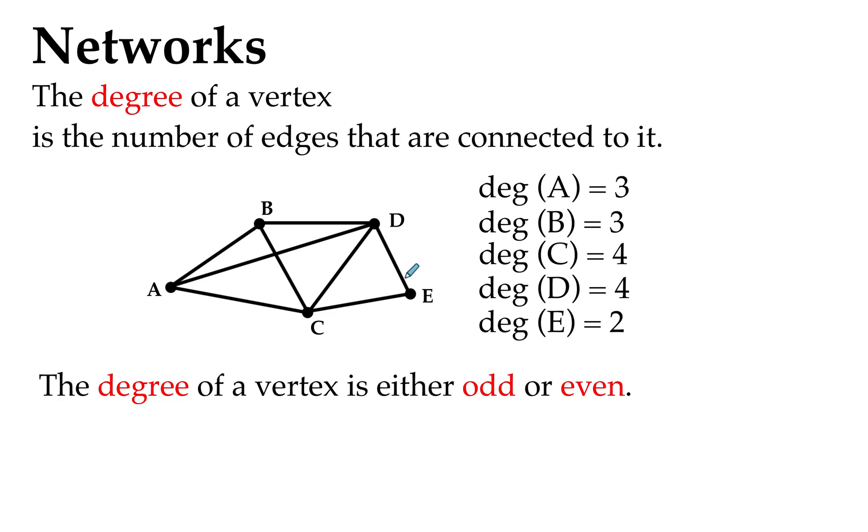And another aspect of a degree is that it can be deemed to be odd or even, just according to the number of edges connected to it. So degree A, which has three edges, degree of A is three and three is an odd number, so we just go by whether the number of the degree is odd or even in those cases. So Deg B is odd, Deg C for vertex C is even, even for vertex D, and even for degree for vertex E. So vertices can be considered to have even or odd degrees.